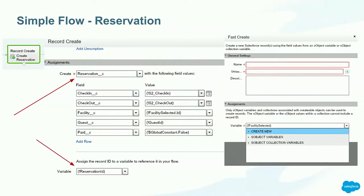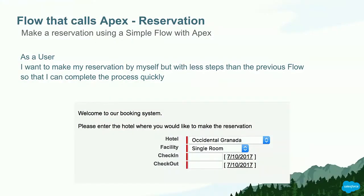I decided to go with a record create instead of a fast create, because for fast create I need to pass an SObject, requiring a middle step to build that SObject with all the information. However, with record create I can pass all the information in one go. And that's all for the simplest use case.